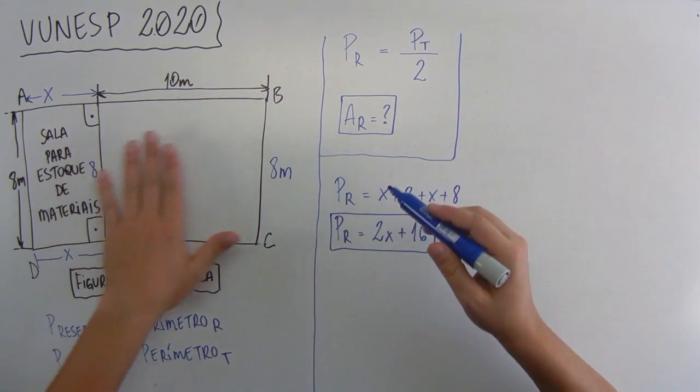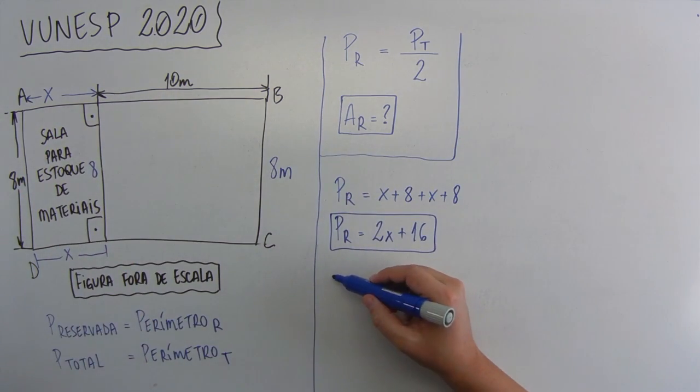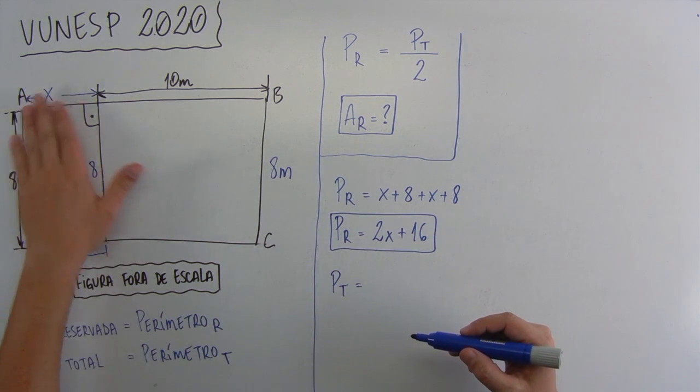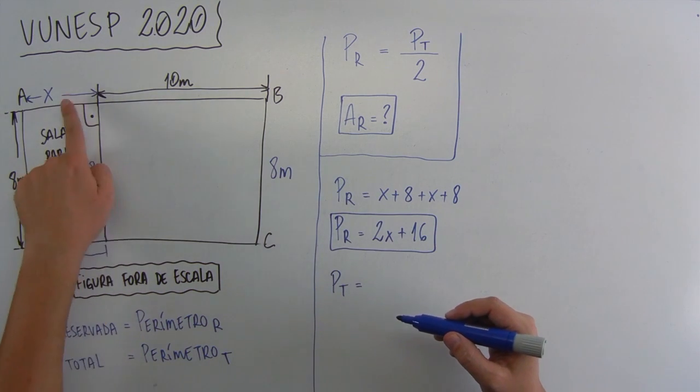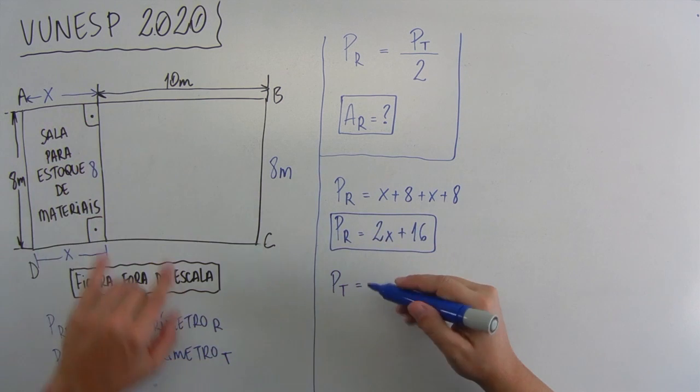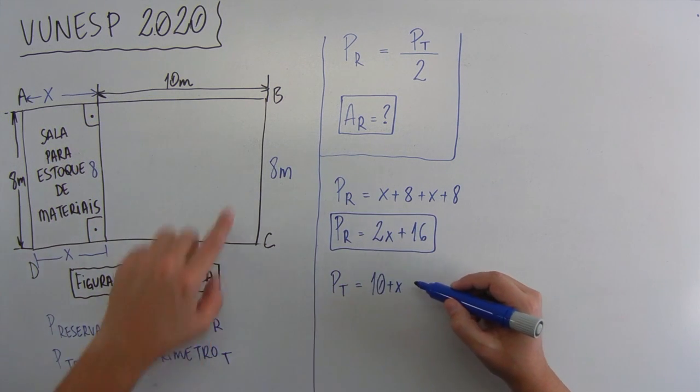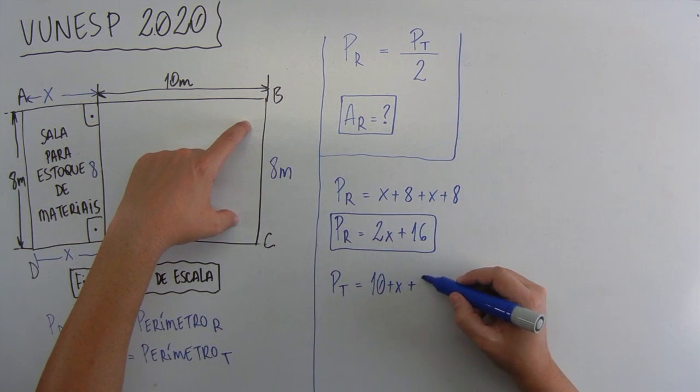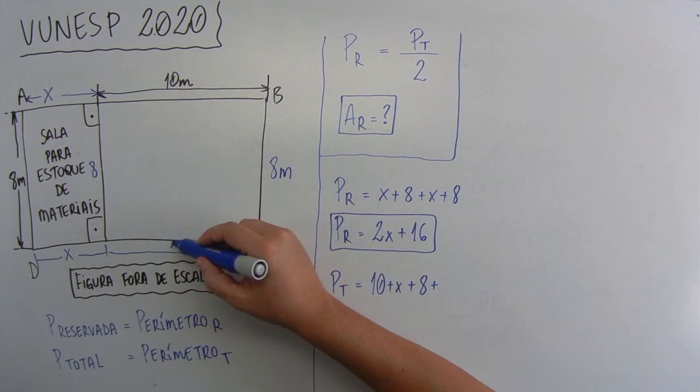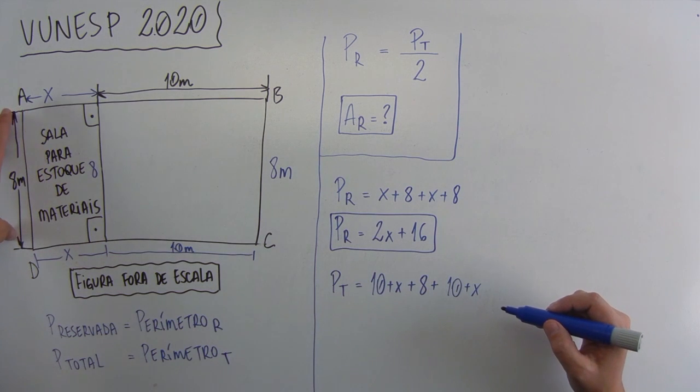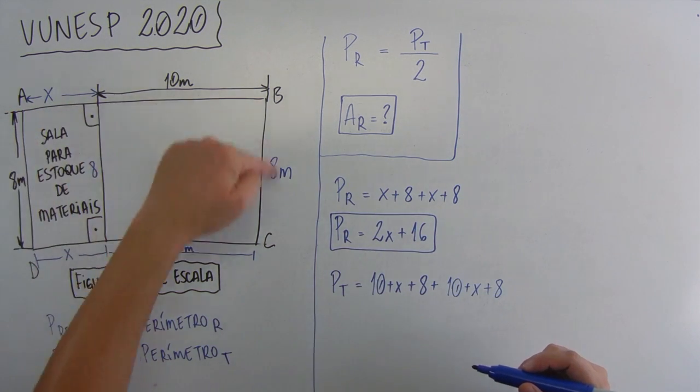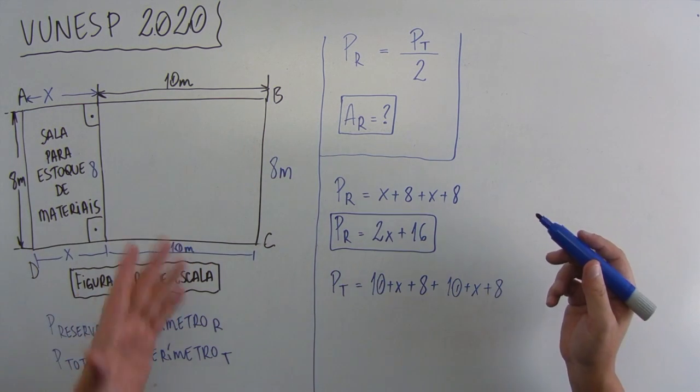E o perímetro total aqui? Vamos ver o perímetro total. O perímetro total, que é da área da sala ABCD, é X mais 10, ou 10 mais X, que é esse pedaço total. Não pode esquecer de somar isso daqui. Então, 10 mais X, mais 8, que é esse pedaço aqui, mais esse pedaço total aqui, que aqui também é 10, mais 8, que é esse daqui.